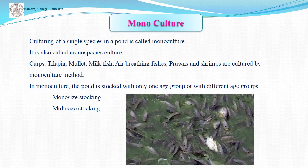The first one is monoculture. The culture of a single species in a pond is called monoculture, also called mono-species culture. Carp, tilapia, mullet, milkfish, air-breathing fishes, and prawns are cultured by this method. In monoculture, the pond is stocked with only one age group or different age groups. Stocking with only one age group is called mono-size stocking; stocking with different age groups is called multi-size stocking.